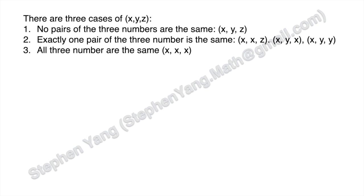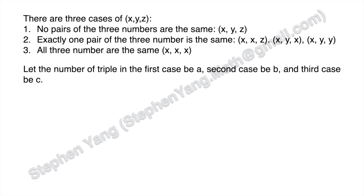Now let's get into the solution. In total, there are three cases for x, y, z without constraints. Case one: no pair of the three numbers are the same — x ≠ y, y ≠ z, x ≠ z. Case two: exactly one pair is the same, which could be (x, x, z), (x, y, x), or (x, y, y). Case three: all three numbers are the same. Let a, b, c be the number of triples in cases one, two, and three respectively. The question falls into case one, so we need to find a.